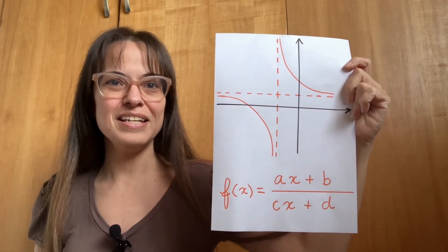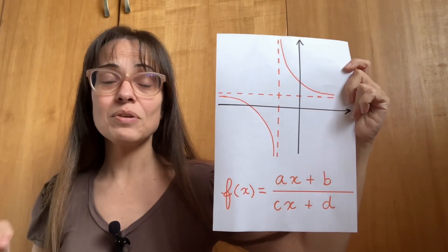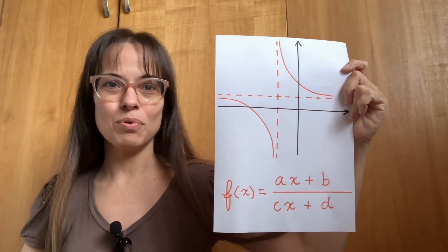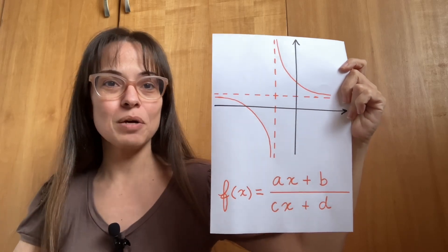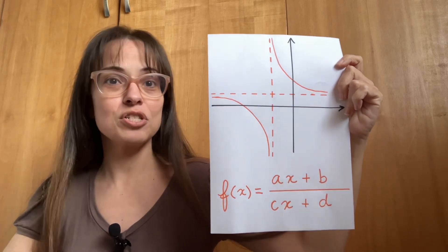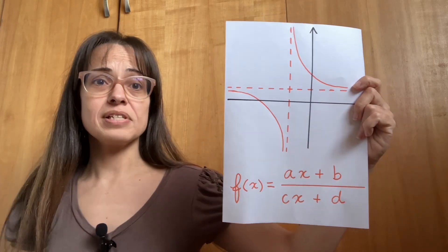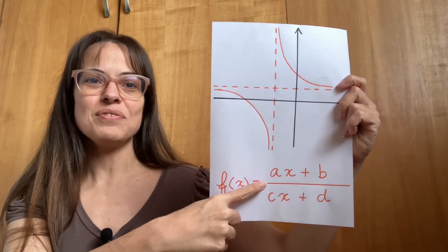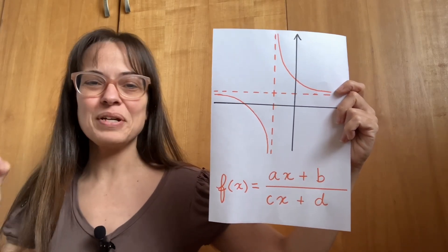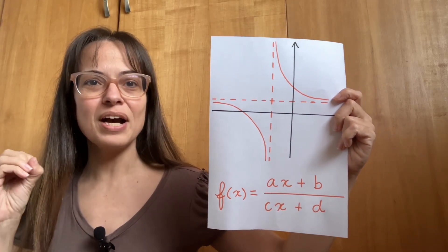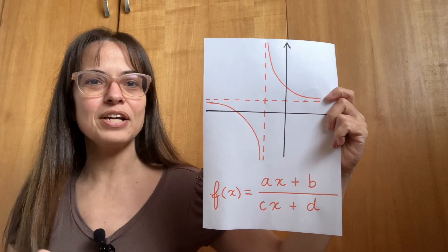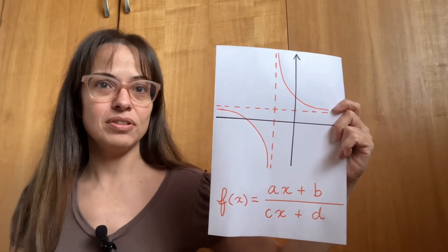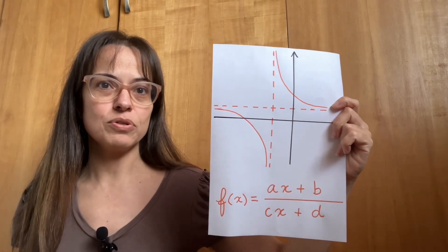But I really try hard to avoid writing it in full generality with all of these letters A, B, C, and D. Instead, what I like to do is always deal with examples — lots of examples with lots of different numbers. It's a linear function divided by another linear function, but the reason why I don't like to use the letters is exactly the thing I want to talk about today.